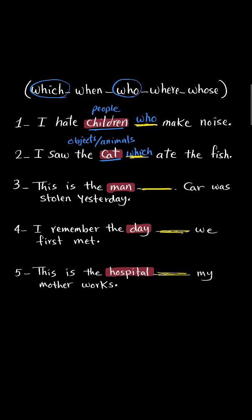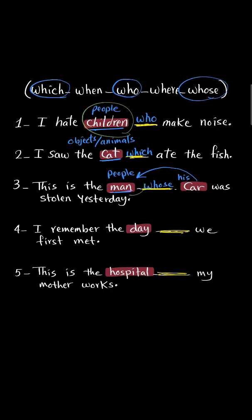Sentence three is a little bit tricky, so focus with me. Here we have 'man' and the word 'man' refers to people, but the word 'car' after the gap belongs to the man. In this case, you choose 'whose' because 'whose' refers to possession — it means his, her, or their. This is the man whose car was stolen yesterday. To tell the difference: 'who' is mostly followed by a verb, like make, take, play, etc. But 'whose' is followed by a noun that belongs to the noun before the gap.